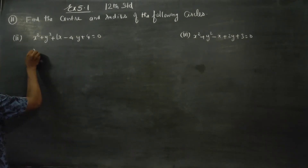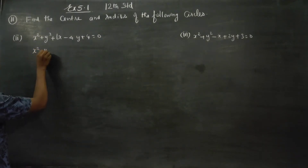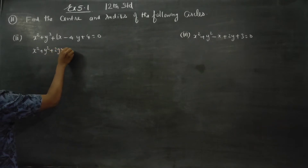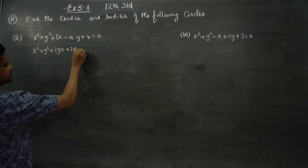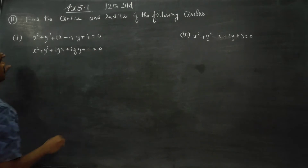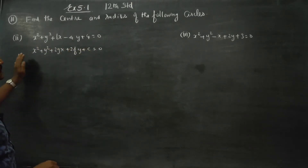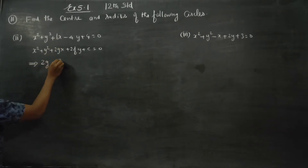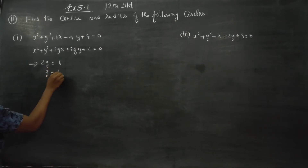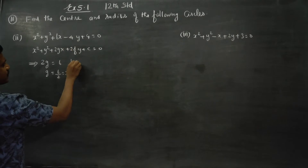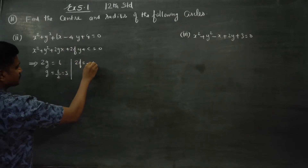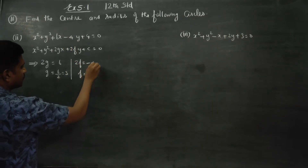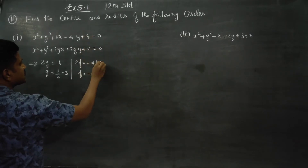You can match this equation with the general form of a circle: x² + y² + 2gx + 2fy + c = 0. Comparing with this standard form, 2g is equal to 6, so g is equal to 3. Then 2f is equal to minus 4, so f is equal to minus 2. And c is equal to 4.